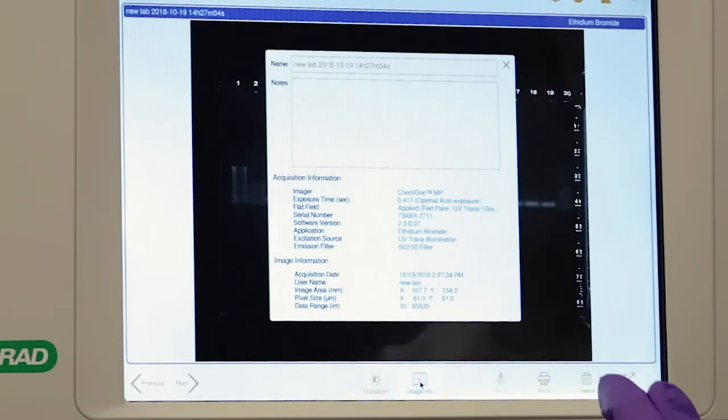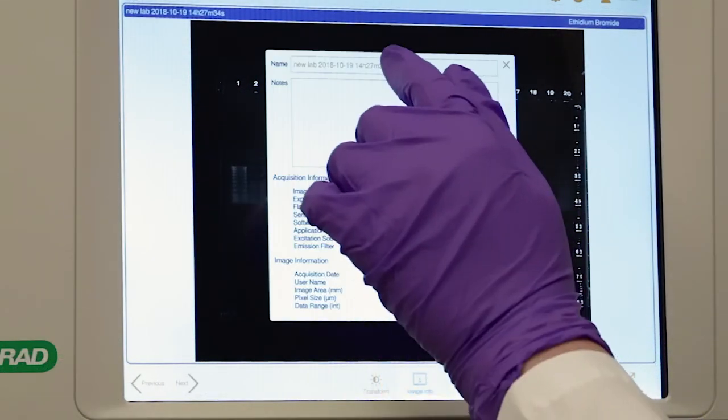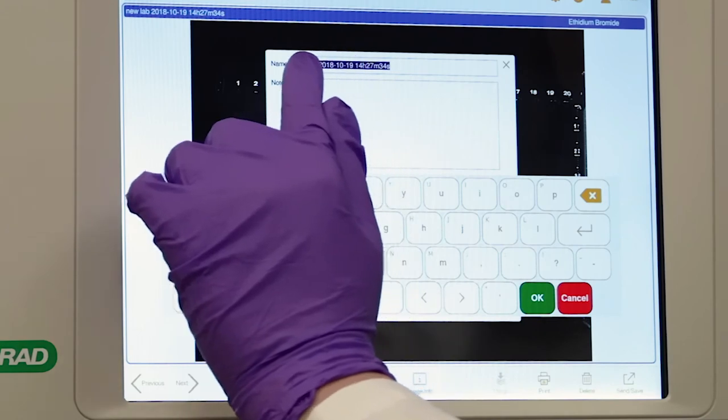Tap the Image Info icon. Here you can enter a custom name and notes about your image or experiment.